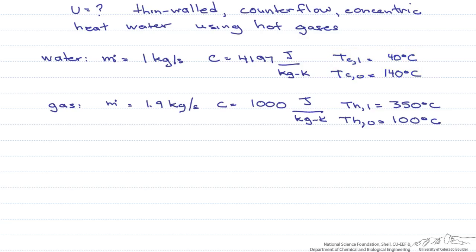The gas has a mass flow rate of 1.9 kg per second. Its heat capacity is equal to 1,000 joules per kg K. It comes in at a temperature of 350 degrees C and exits at a temperature of 100 degrees C.